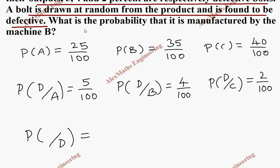So, the question they are asking: what is the probability that it is manufactured by machine B? So, they are asking for B. So, it will come in the numerator.